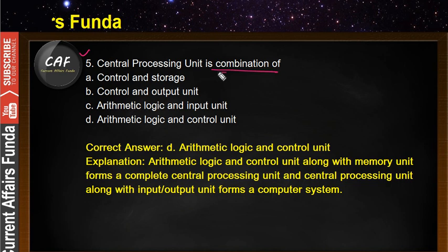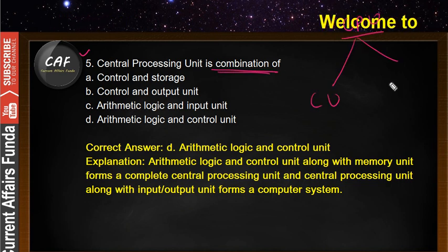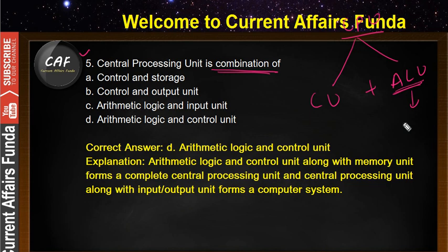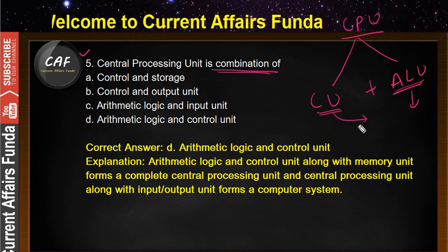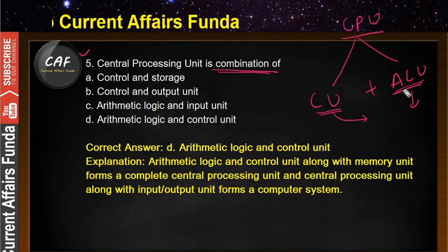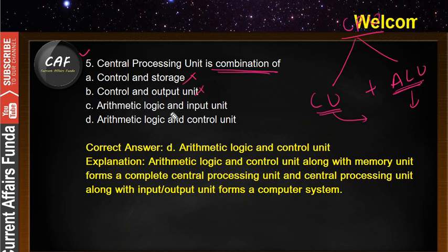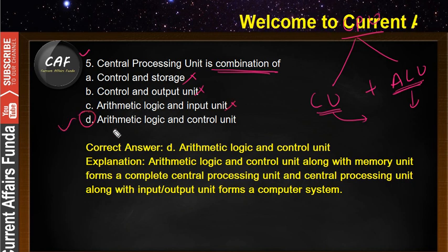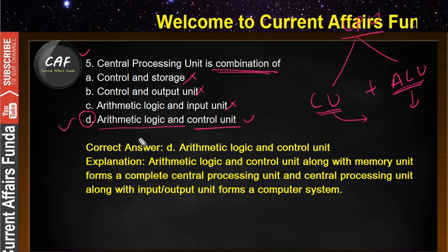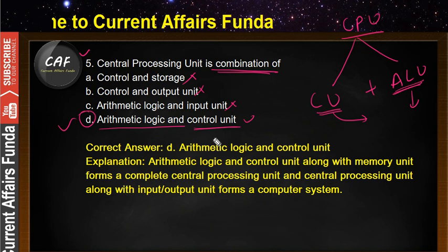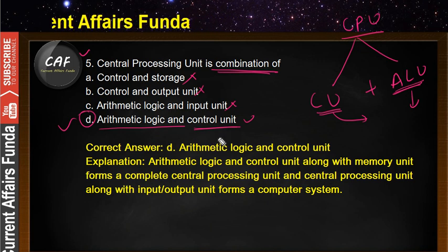Problem number 5: the central processing unit is a combination of what? The CPU is a combination of the Control Unit (CU) plus the Arithmetic Logic Unit (ALU). The ALU performs all operations and the control unit controls. So CPU equals CU plus ALU. 'Control and storage' is not correct, 'control and output unit' is not correct, and 'arithmetic logic and input unit' is not correct. The correct answer is D — arithmetic logic unit plus control unit.